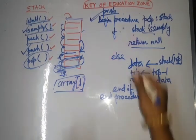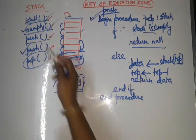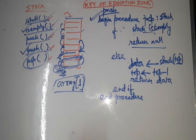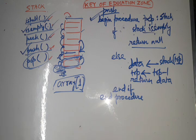To summarize: push means insertion, pop means removal, is_full checks if the stack is full, is_empty checks if the stack is empty, and peek returns the current top value. These are the five stack operations in data structure. Follow our previous lectures for more context. Subscribe to Key of Education Zone — another lecture on queue and other data structure topics is coming soon. Thank you for watching.